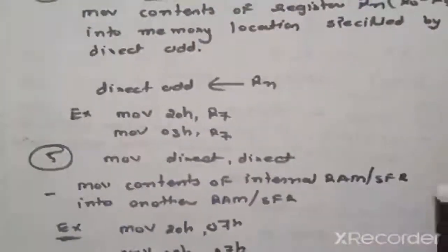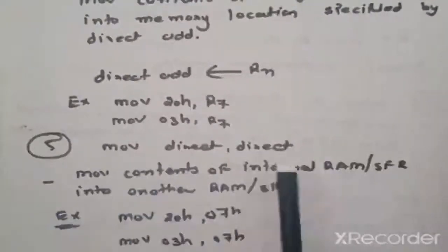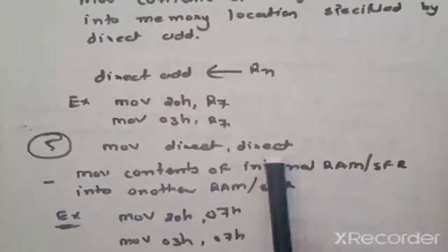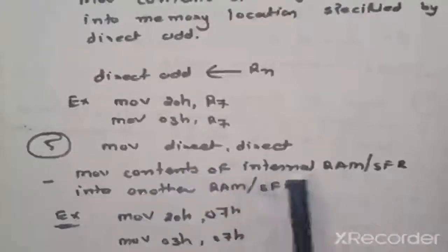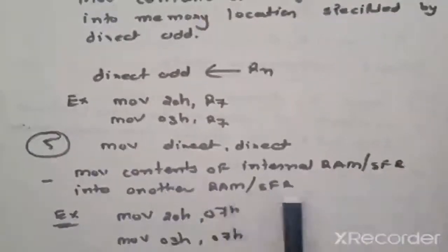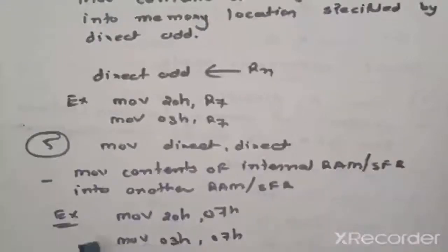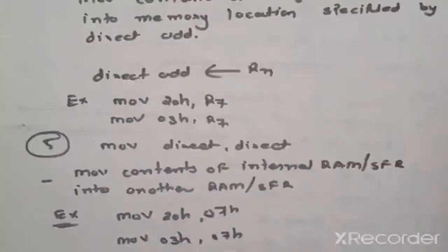Next instruction: MOV direct, direct — moves content of internal RAM or SFR into another RAM or SFR location. Example: content of 07H is transferred to 20H; content of 17H is transferred to 03H.